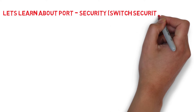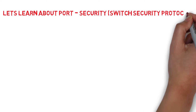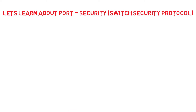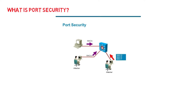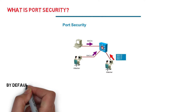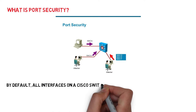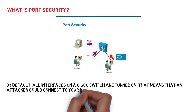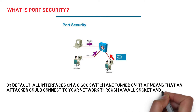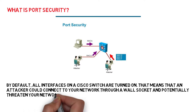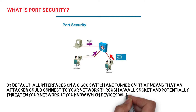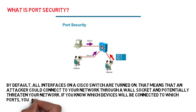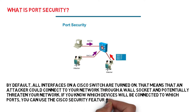Today, let's learn about port security, a switch security protocol. What is port security? By default, all interfaces on a Cisco switch are turned on. That means an attacker could connect to your network through a wall socket and potentially threaten your network. If you know which devices will be connected to which ports, you can use the Cisco security feature called port security.